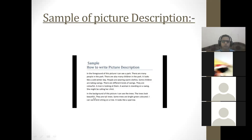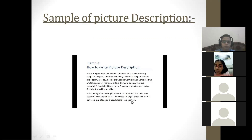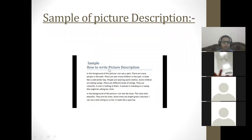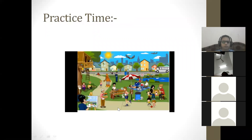This is the end of the first paragraph, where all foreground things have been described. Now the second paragraph: 'In the background of this picture, I can see the trees. The trees look beautiful — they are tall trees. Some trees are bright green colored. I can see a bird sitting on a tree. It looks like a sparrow.' This is a speculation — the bird may not be clearly visible, so 'it looks like a sparrow' has been used. So two paragraphs: one of foreground and one of background.